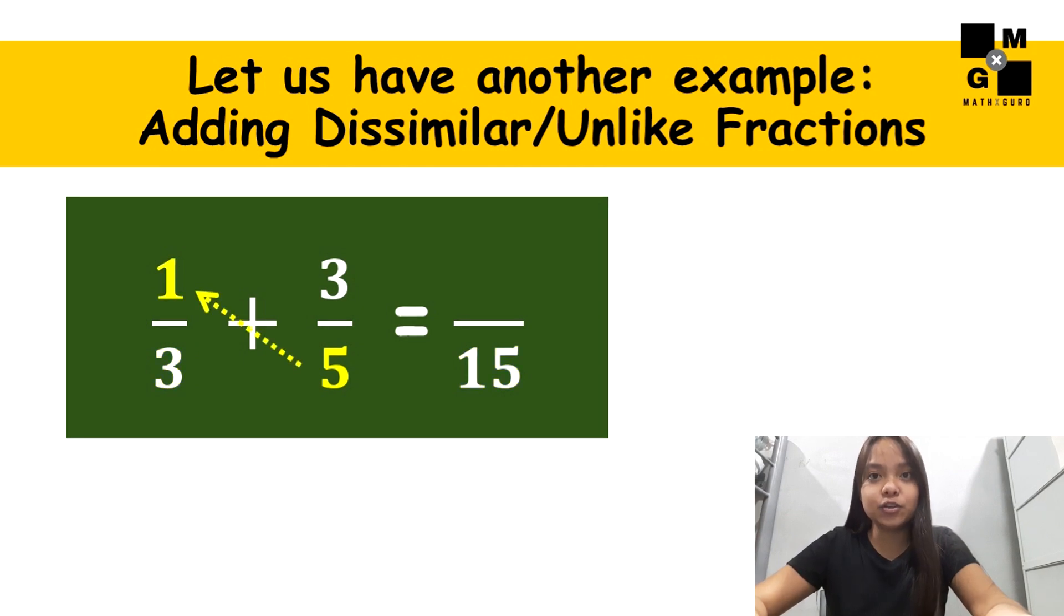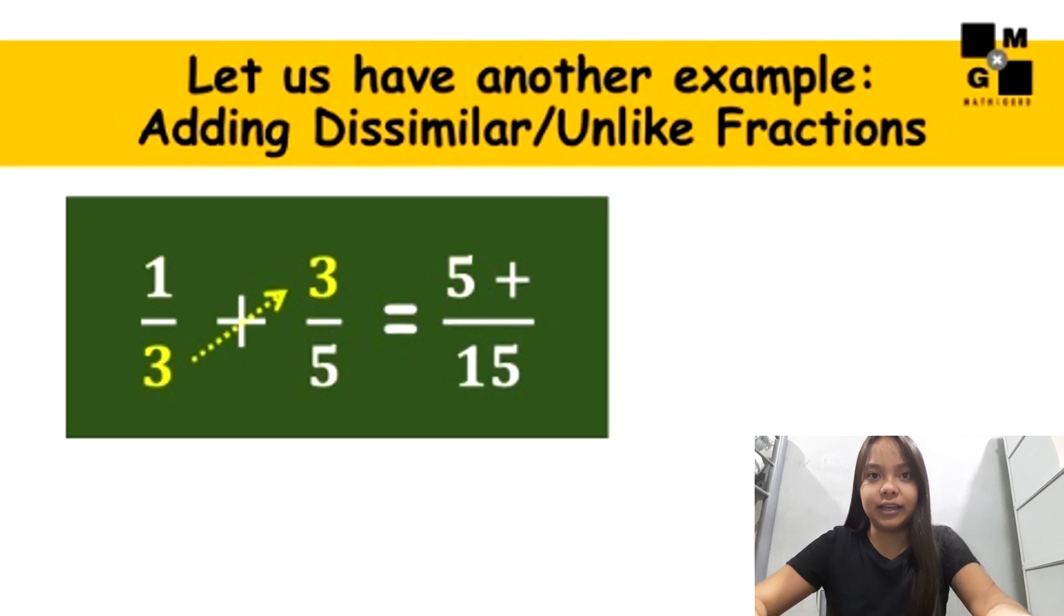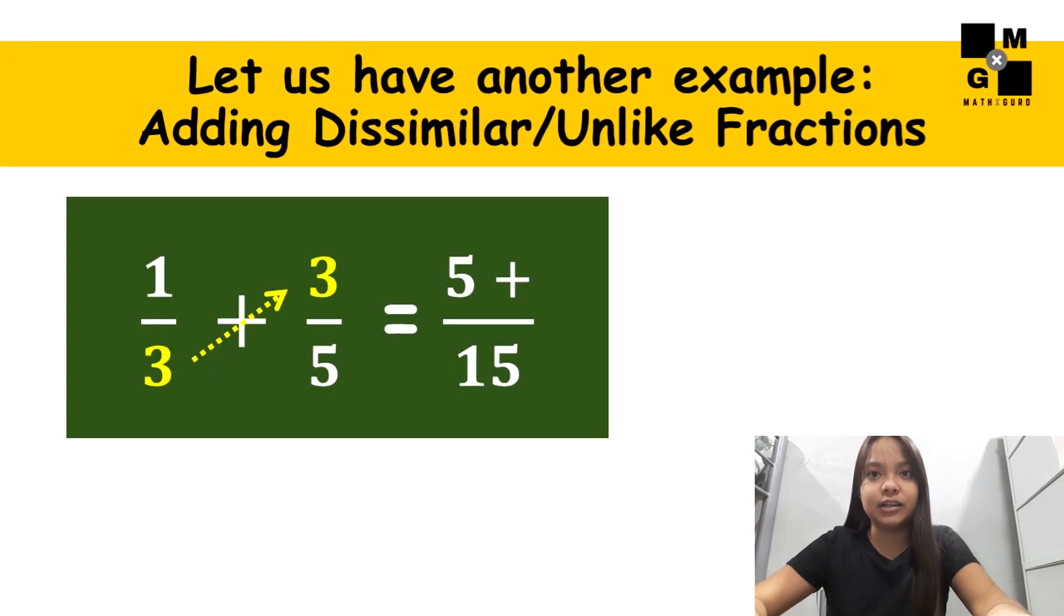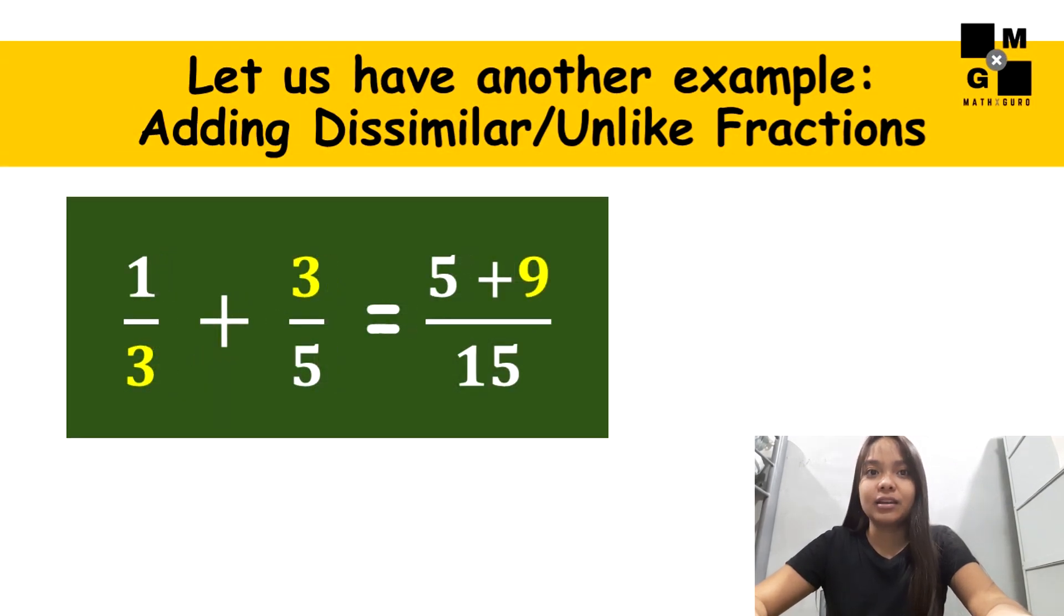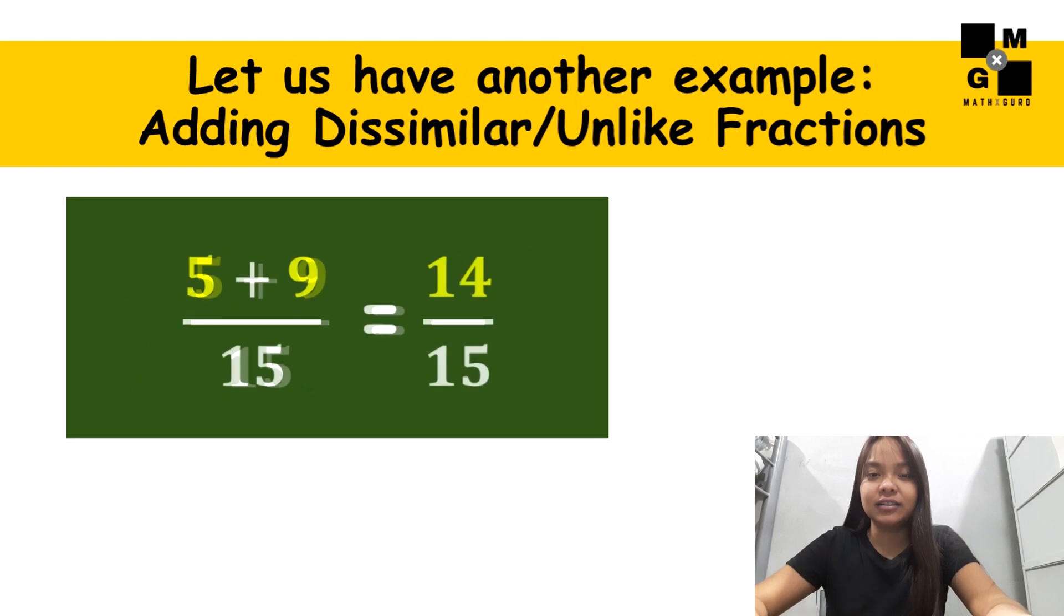Then, the second step is to cross-multiply. Multiply five and one, so you will get an answer of five. Then after that, cross-multiply again. Three times three is nine. Then, we add five and nine, we will get a sum of fourteen.